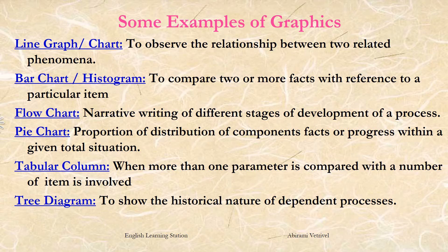The third type of graphical representation is the flow chart. Narrative writing of different stages of development of a process can be represented using a flow chart. The fourth type of graphical representation is the pie diagram or pie chart. The proportion of distribution of components or progress within a given total situation is represented using a pie chart. Pie charts are designed to visualize how a whole is divided into various parts, where each segment represents a particular category and a percentage distribution.